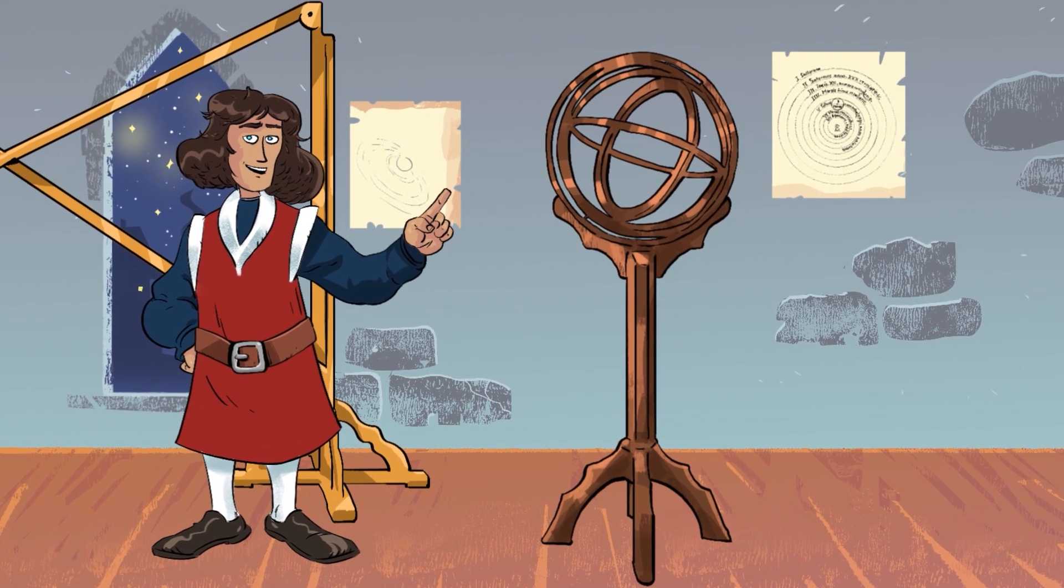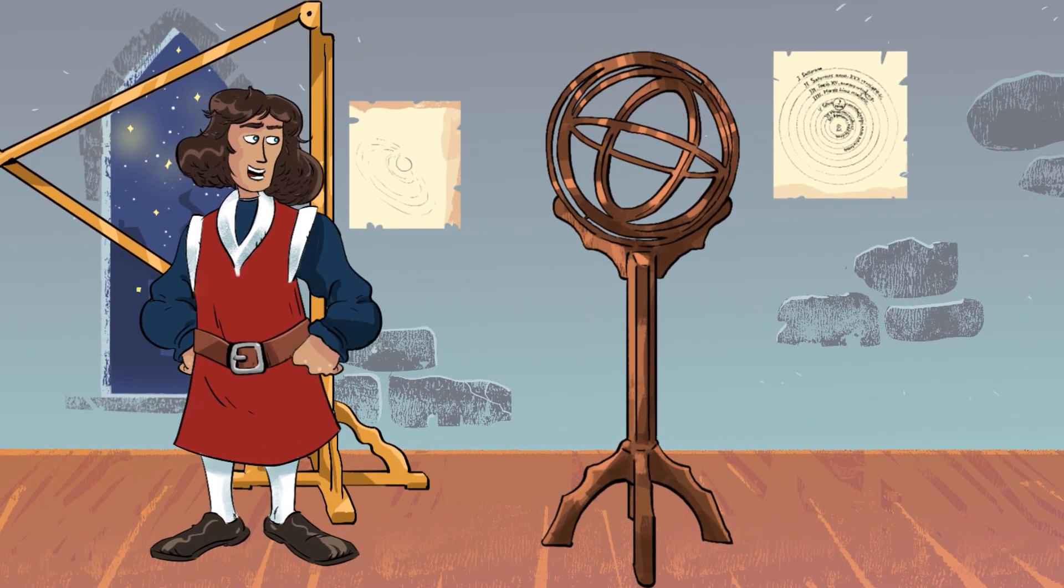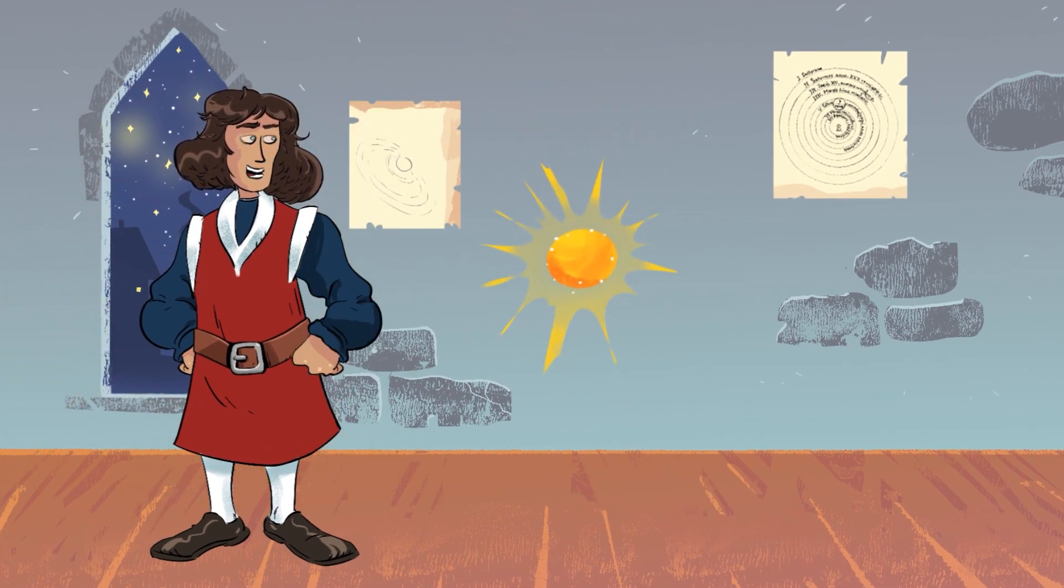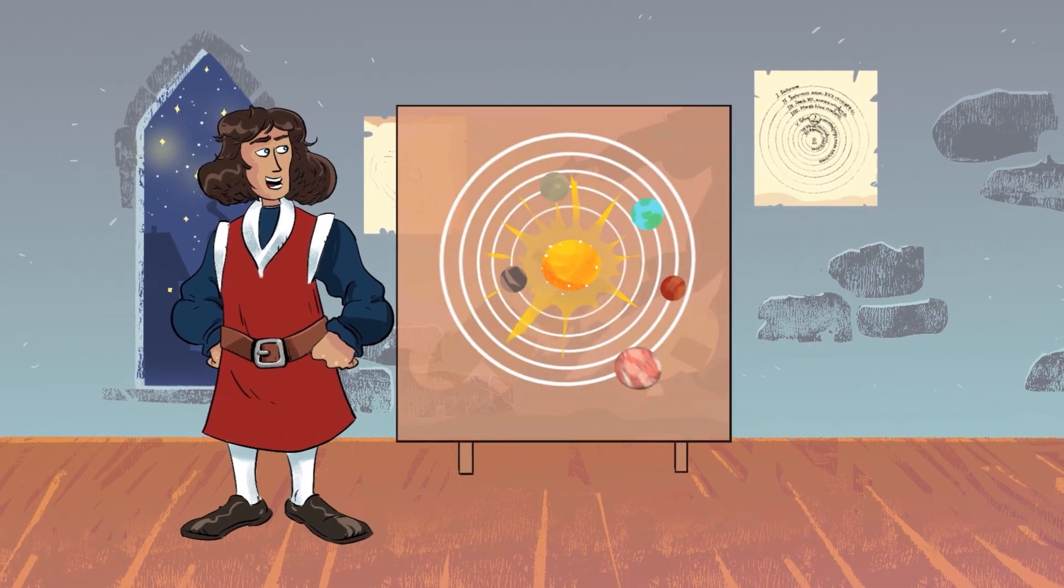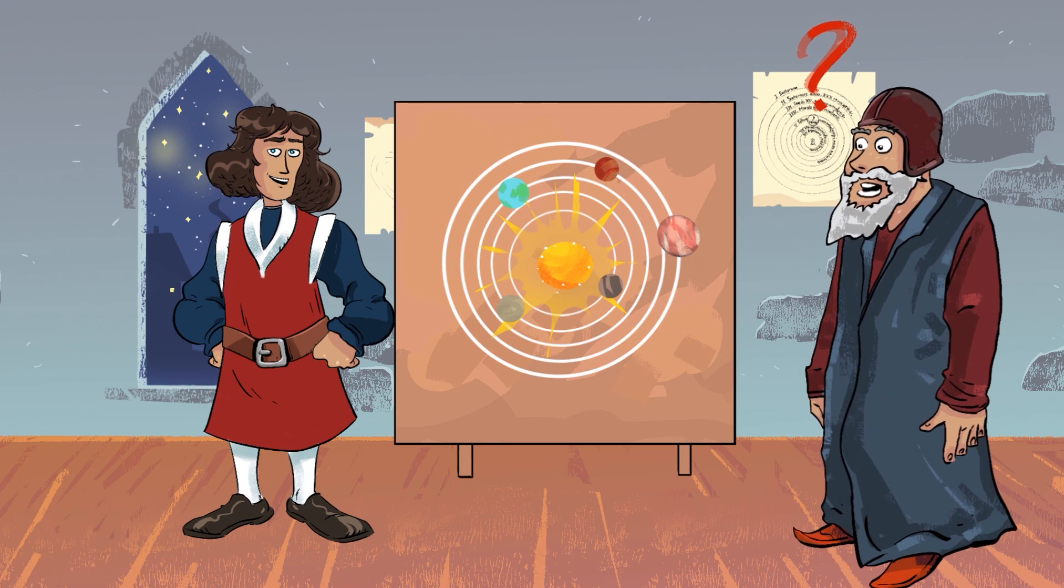Who does not know the famous words: stop the Sun, move the Earth? Nowadays, they seem to be obvious. But for the people from Copernicus's time, they must have been quite shocking.